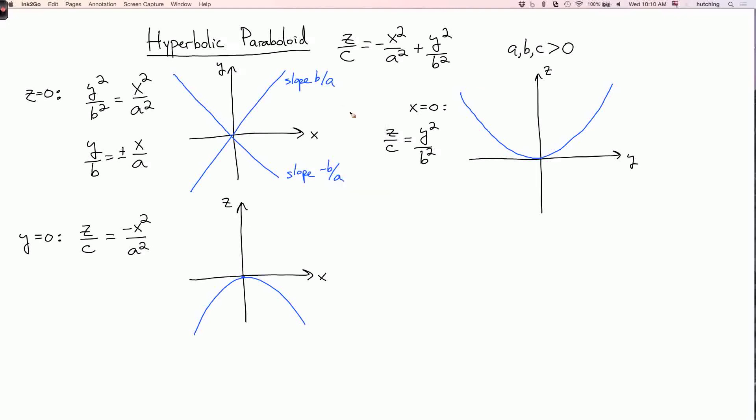Now, for this particular surface, it helps to get a bit more information. So another thing we can do is set z to be a constant, let's call it z₀, which is not equal to zero. Let's say it's positive. So what does this do? This tells us what the intersection of the surface looks like with a horizontal plane which is above the xy plane. It's parallel to, but not the same as the xy plane. So if we set z to be a positive constant, then I get the equation z₀/c = -x²/a² + y²/b².